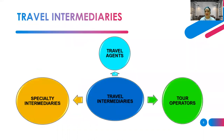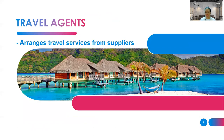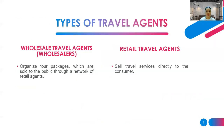The different travel intermediaries are travel agents, tour operators, and specialty intermediaries. Travel agents arrange travel services from suppliers, and their basic job is to assist the travel needs of consumers. There are two types: wholesaler travel agents, who organize tour packages sold to the public through a network of retail agents, and retail travel agents, who sell travel services directly to the consumer.